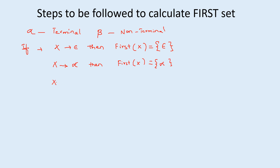If x → α followed by β1, β2 — that means a terminal followed by non-terminals — then the first of x will also be the terminal itself.